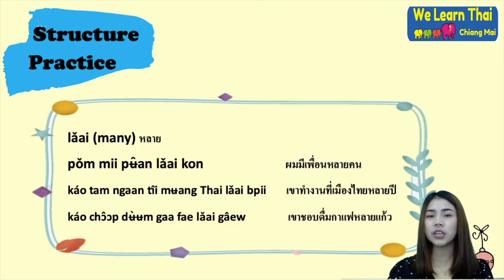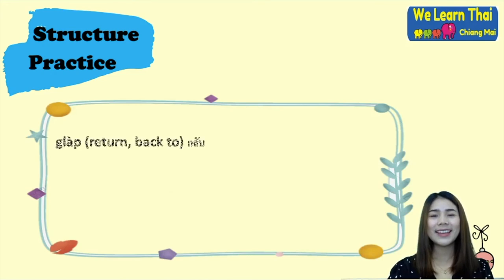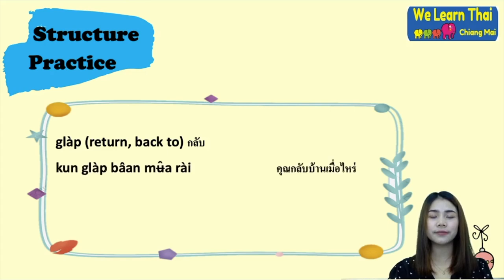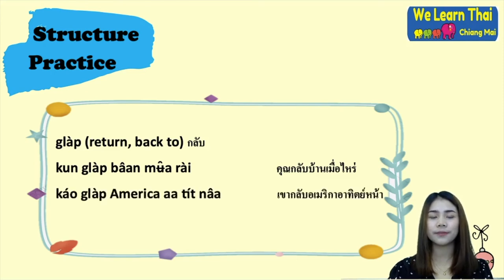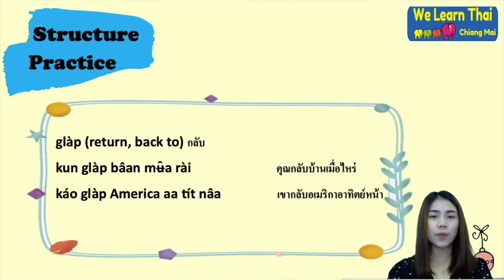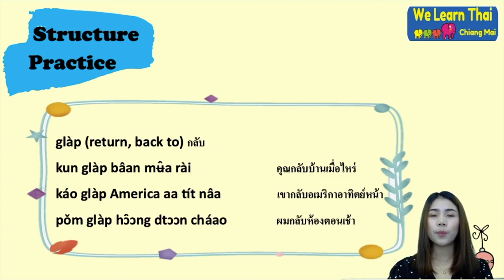The next word is กลับ (glap), meaning 'return' or 'back to.' For example: คุณกลับบ้านเมื่อไหร่ — 'When will you go back home?' เขากลับอเมริกาอาทิตย์หน้า — 'He/she will go back to America next week.' ผมกลับห้องตอนเช้า — 'I go back to my room in the morning.'